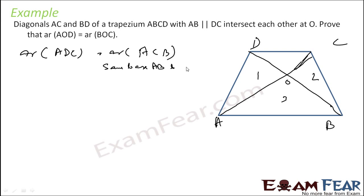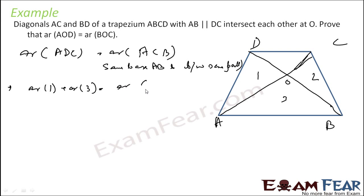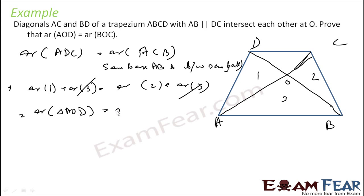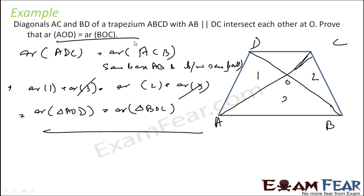So I can start: area of ADC is equal to area of ABC — same base AB, and DC is parallel to AB. So area of ADC is area of 1 plus area of 3. Area of ABC is area of 2 plus area of 3. Area of 1 equals area of 3, area of 2 equals area of triangle UC, and that's what we add to 3.